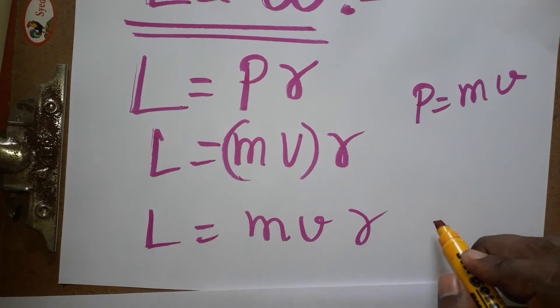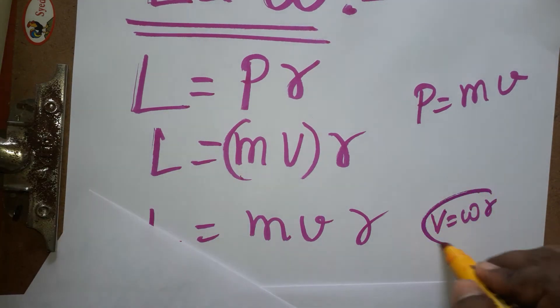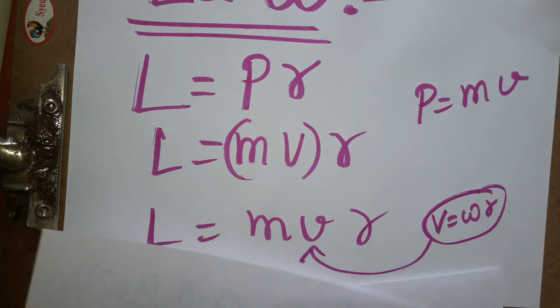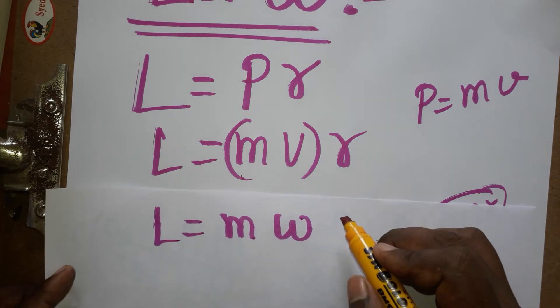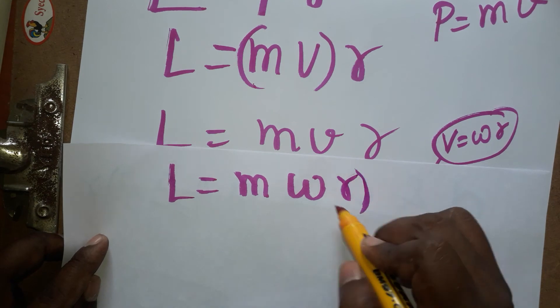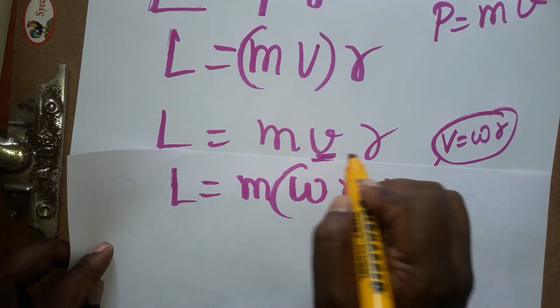Just I am going to substitute in this equation. So angular momentum is equal to m omega, because v we got as omega r. Omega r into r, because v is omega r, so r times r is r squared.